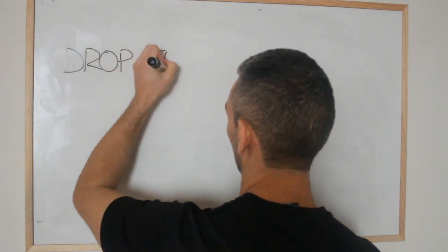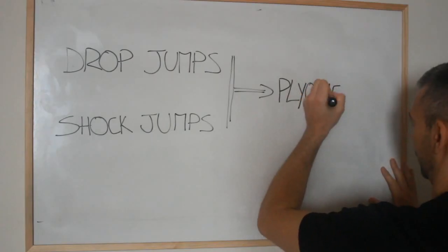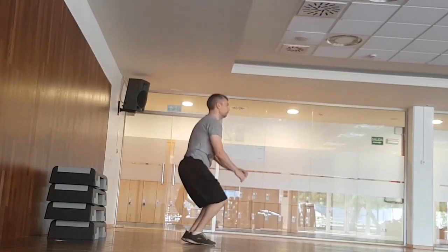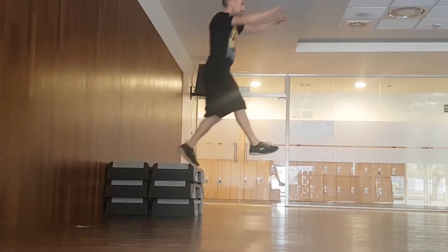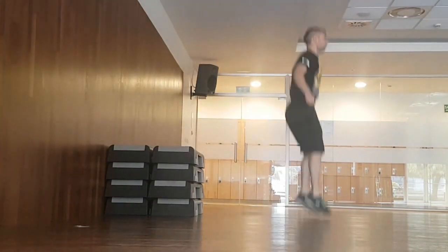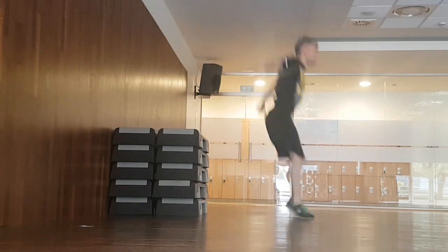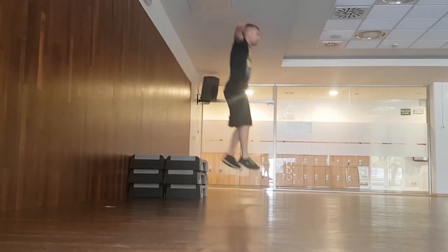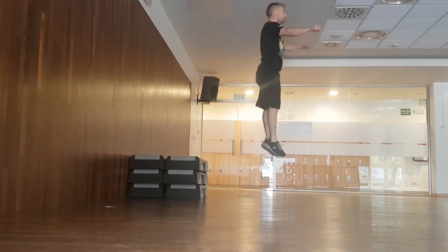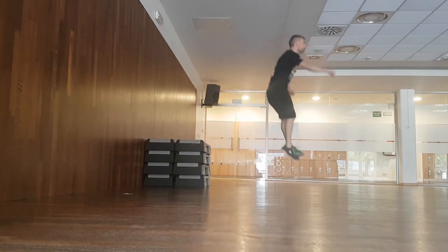Plyometric training was developed during the 1970s in the Soviet Union and consisted of two basic exercises: drop jumps and shock jumps. Drop jumps work your ability to quickly convert the elastic energy stored in the eccentric phase into the upward movement of the stretch-shortening cycle. The exercise consists of dropping from an elevated surface and quickly bouncing upon landing. What you need to focus on is the speed of your reaction — as soon as you feel the balls of your feet touching the ground, you must reverse the motion from downwards to upwards and jump again as fast as you can. Imagine you were landing on burning embers: make as little contact as possible with the ground.